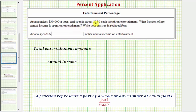Because she spends $250 each month on entertainment, the total amount of entertainment per year would be 12 times 250, which is equal to 3,000.